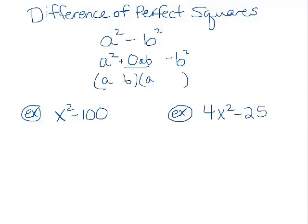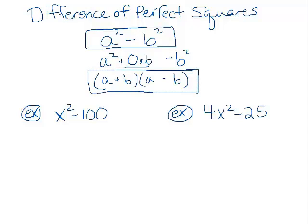Well, b and b would be something. So to get a negative b squared, we would want one of these b's to be positive and one of them to be negative. And if you were to multiply these two binomials, you'll see that the ab terms will cancel out. So our difference of perfect squares will always factor into a plus b times a minus b.